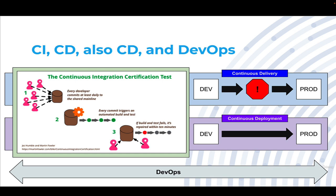On every one of those changes, known as a commit, it triggers an automated build and test that will verify the work that has been happening. And in the event something goes wrong — and it will — it's fixed quickly. This is about team ownership, from checking in code to then having to deal with any problems with it.